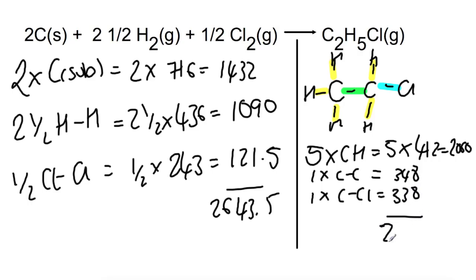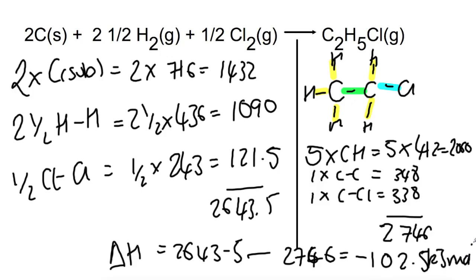In total, the energy released is 2746. To do delta H, we do the breaking side minus the making side to give us a value of negative 102.5 kJ per mole.